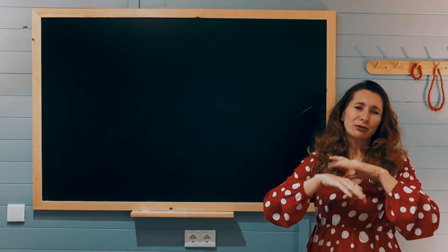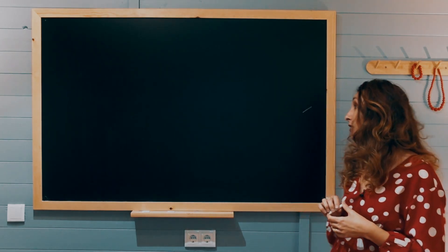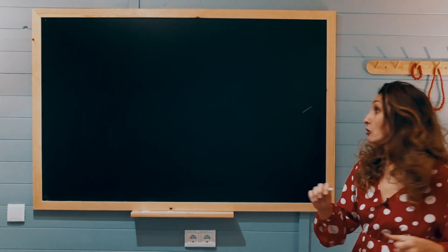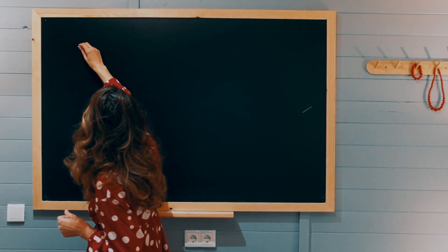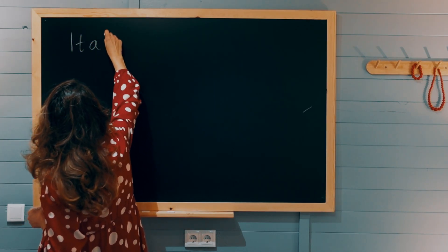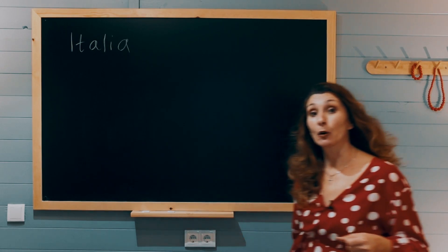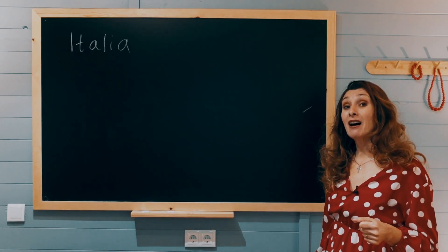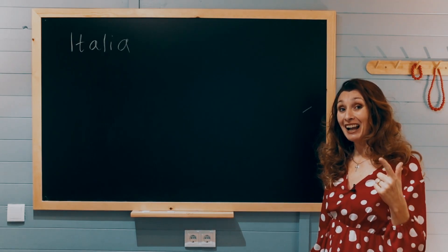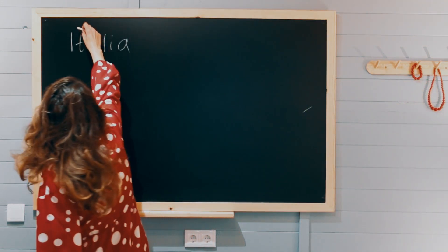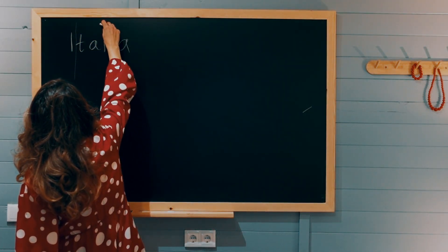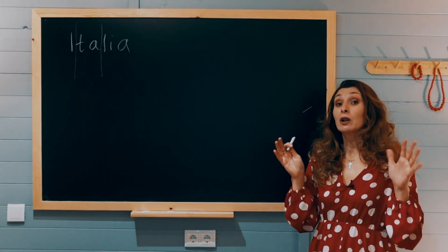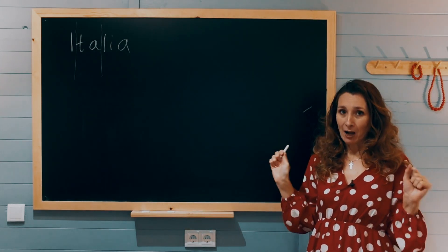Speaking of countries, let's have a look at Italy in Spanish. Italy in Spanish is Italia. And there are three syllables: I-ta-lia. As you can see, a syllable will always have at least one vowel — A, E, I, O, U in Spanish. Basically syllables are always chunks of words where we have at least one vowel.